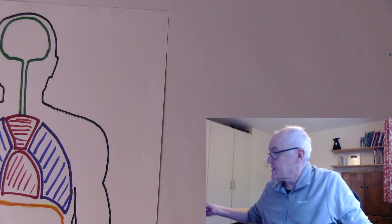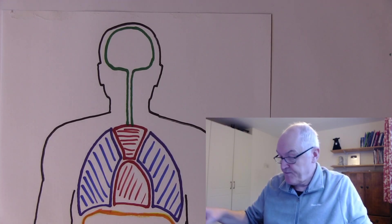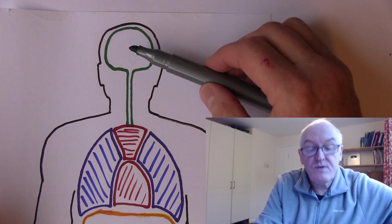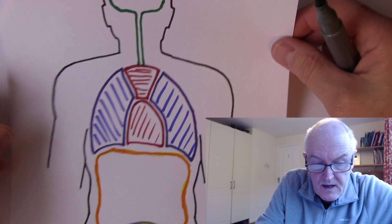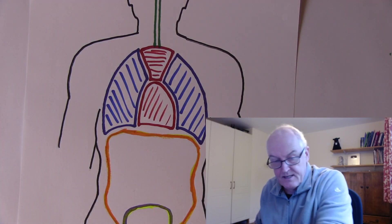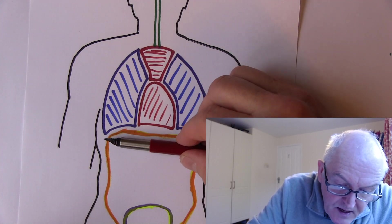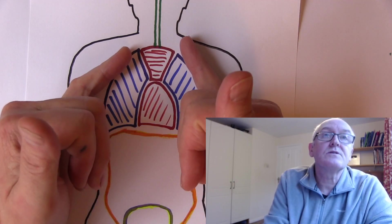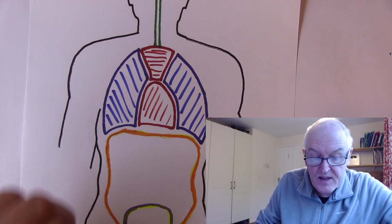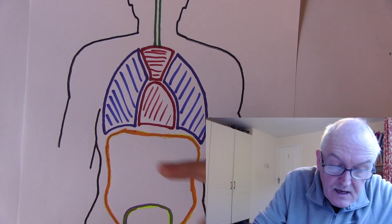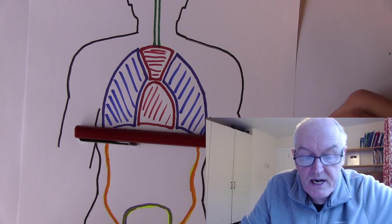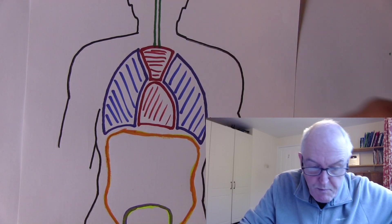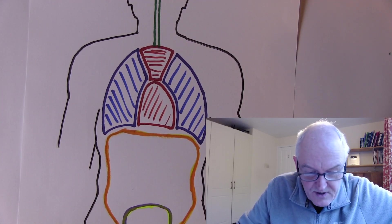From the anterior view we can see the cranial cavity containing the brain, and the top of the vertebral or spinal cavity. The thoracic cavity is protected by the ribs and intercostal muscles, and is compartmentalised from the abdominal cavity by the diaphragm — this dome-shaped muscle that runs across, separating the superior ventral cavity from the inferior ventral cavity.